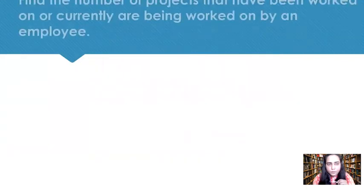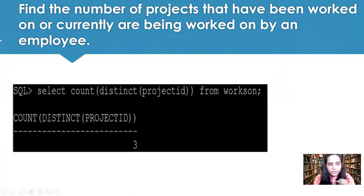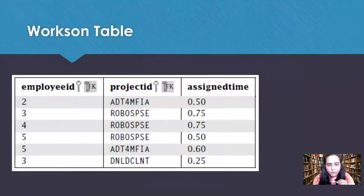The next query is: find the number of projects that have been worked on or are currently being worked on by an employee. This uses the works_on table. You can do it with SELECT COUNT(DISTINCT project_id) FROM works_on. The result is three, and I'll explain why we use the DISTINCT keyword.